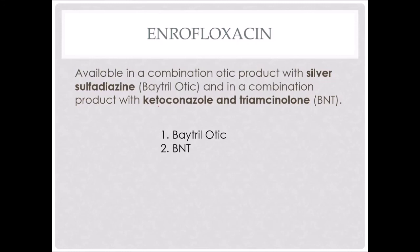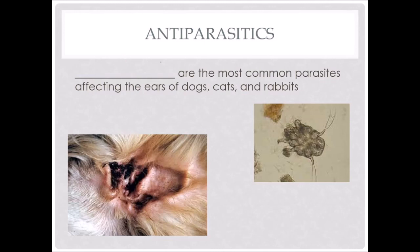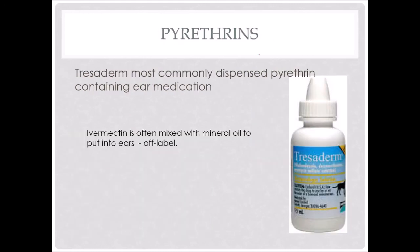Antiparasitics: ear mites are the most common parasites affecting the ears of dogs, cats, and rabbits, but most commonly we're going to see them in cats. Pyrethrins can be used to kill parasites. Tresaderm is the most commonly dispensed pyrethrin-containing ear medication. Sometimes ivermectin is mixed with mineral oil and put into the ears, but we have to use it at the right dose and let the owners know because it is off-label. When using Tresaderm to treat parasites, we must use it for three weeks, because of the life cycle of the parasite and the fact that it comes out of the ear very quickly, so we have to retreat daily, twice a day, for three weeks.